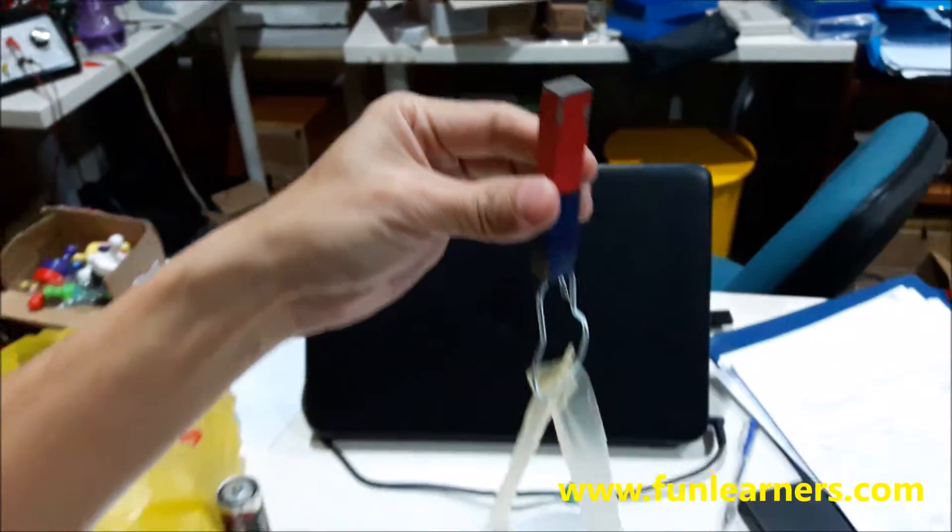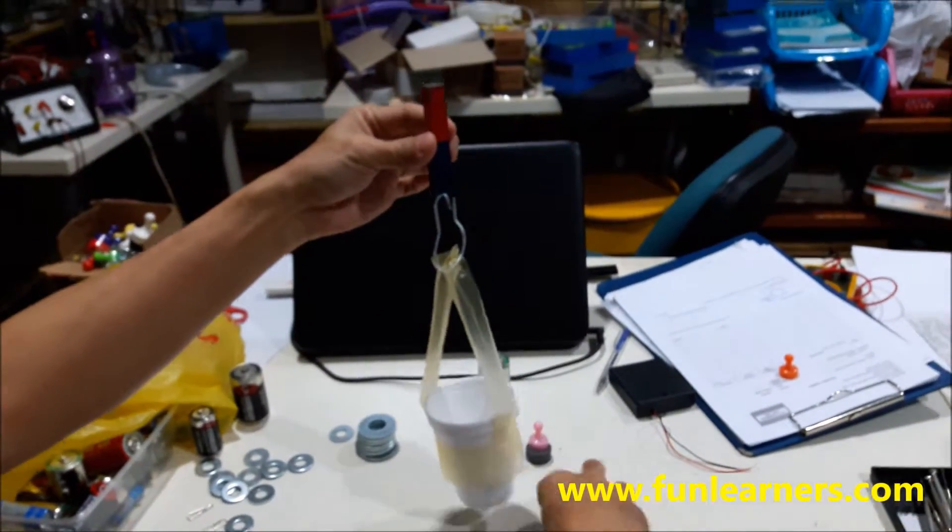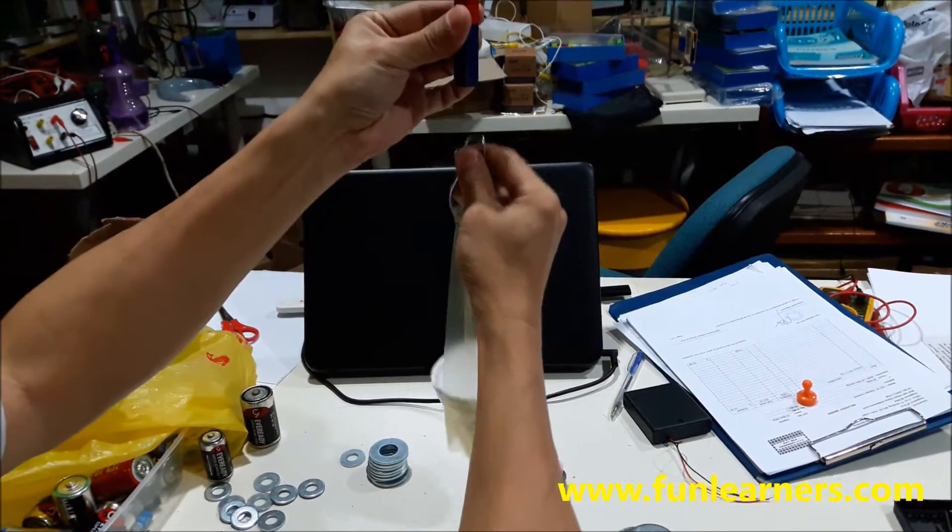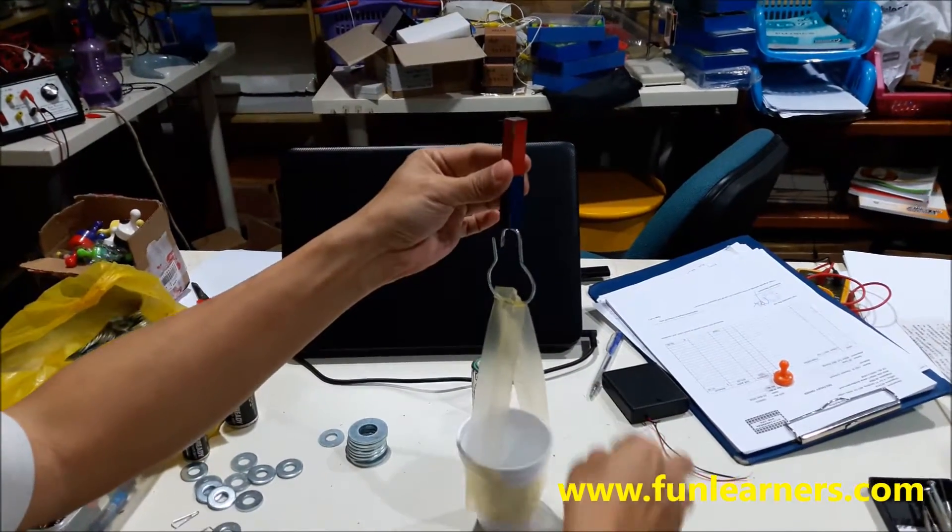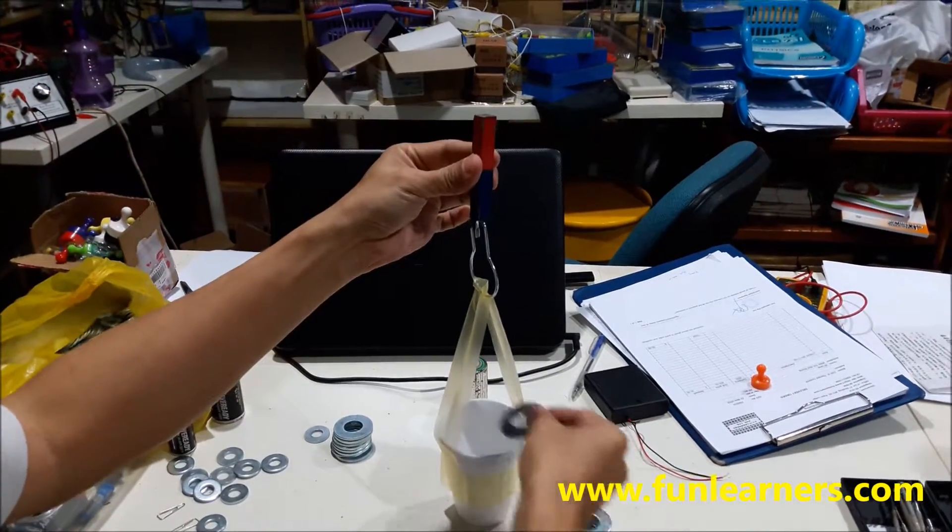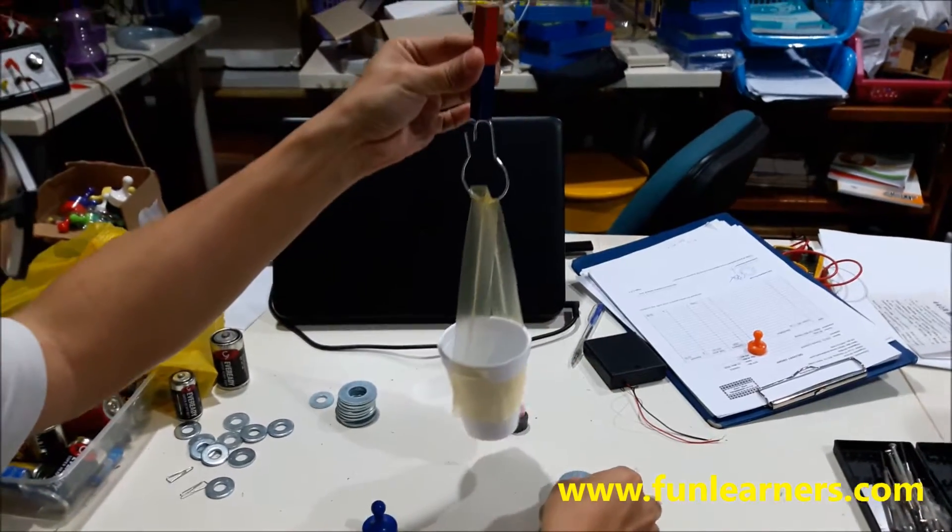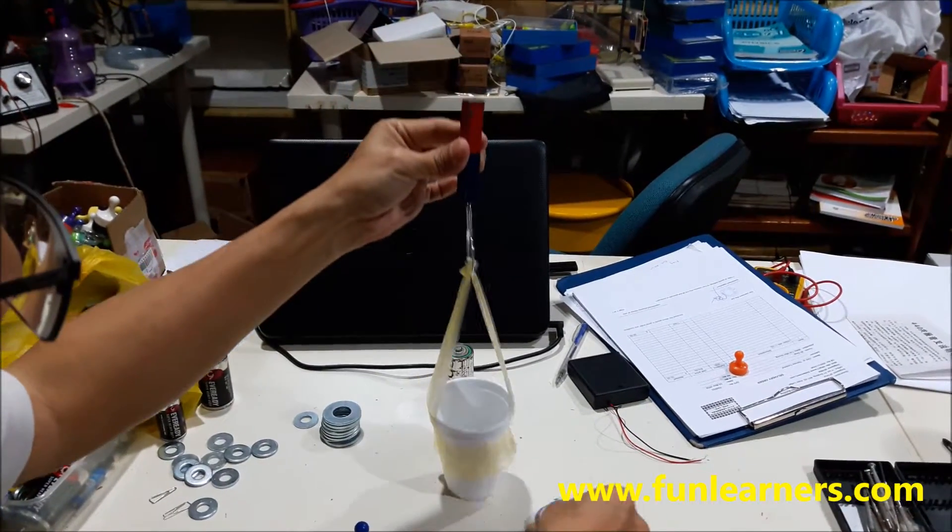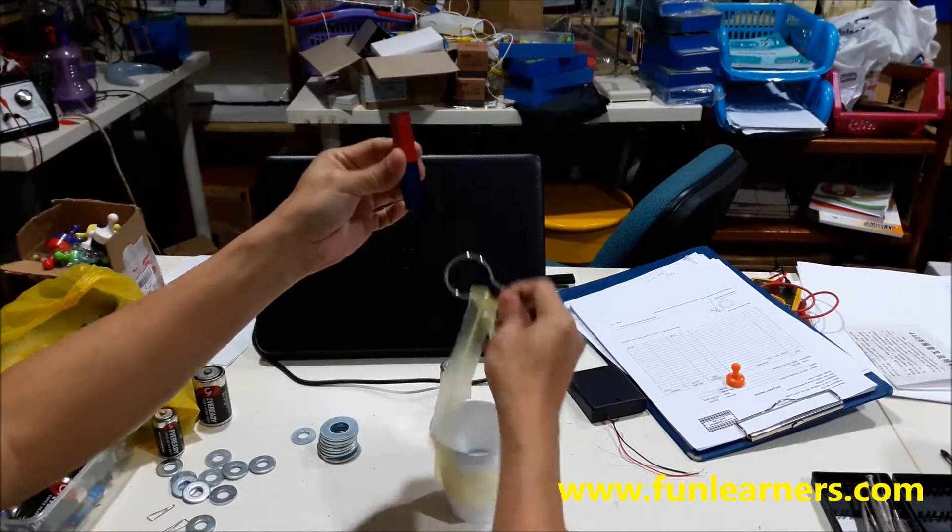Now we'll keep adding equal weights. For this experiment we're using washers. Let's see how many washers it can withstand with this magnetic force. Put down one, can lift up two, three, four, five, six, seven, eight, nine, ten, eleven. Let's try again.